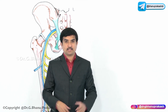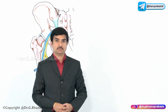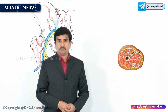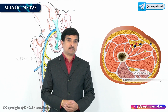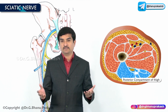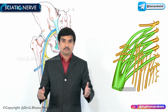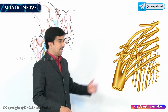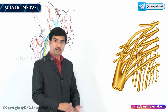Today's class we are going to discuss about another important nerve of the lower limb which is the sciatic nerve. Sciatic nerve is the chief nerve of the posterior compartment of the thigh. It is the largest branch of the sacral plexus and it is the thickest nerve of the body.